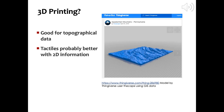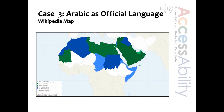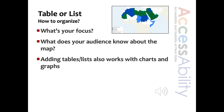We'll switch gears again to a language data map. Here, a color-coded map shows where Arabic is spoken as an official language, mostly in countries of North Africa and the Middle East. This is a case where I might provide a table or a list, but there are several ways to structure that list. What's the focus of the map? Is it just a way to identify countries where Arabic is spoken? In that case, a simple list might do. Alternatively, if it is for a sociolinguistics course, you might want a table with additional fields.